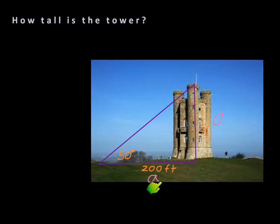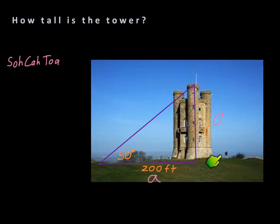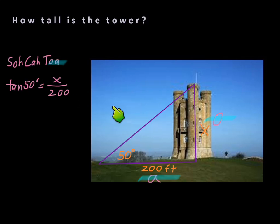With 50 degrees as our reference angle, the 200-foot base is our adjacent side and the height of the tower is our opposite side. Notice we're not using the hypotenuse at all — we don't care about that length; we only care about how tall the tower is. So this is 200 feet for the adjacent, and the tower height is our opposite. Using SOHCAHTOA, we're looking for O and A — opposite and adjacent — which is TOA, the tangent ratio.